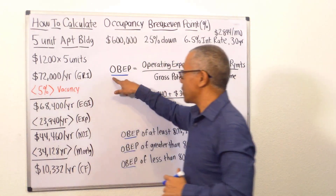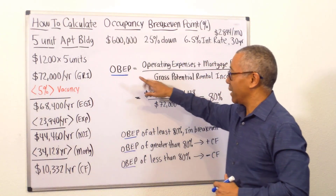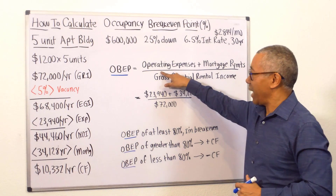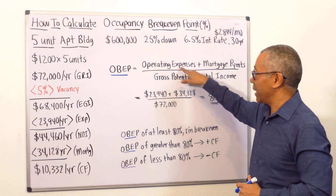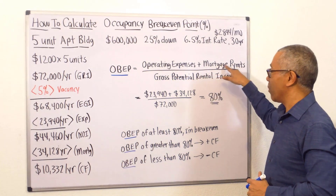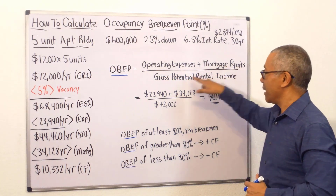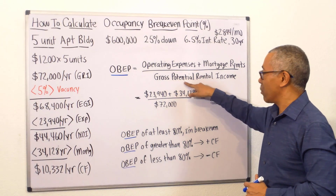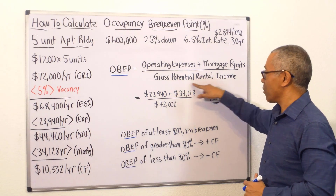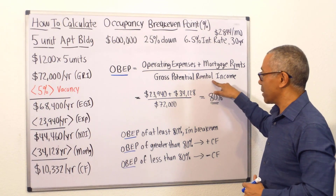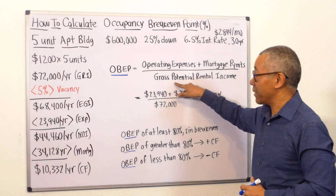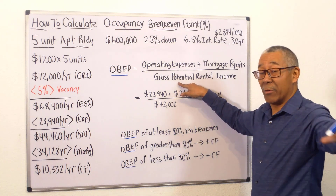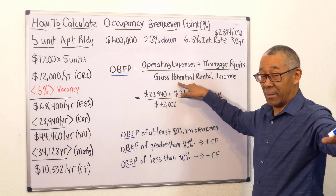So here's the equation. The occupancy break-even point formula is: your annual operating expenses plus your annual mortgage payments, divided by your annual gross potential rental income. Gross potential means if all the units are occupied.